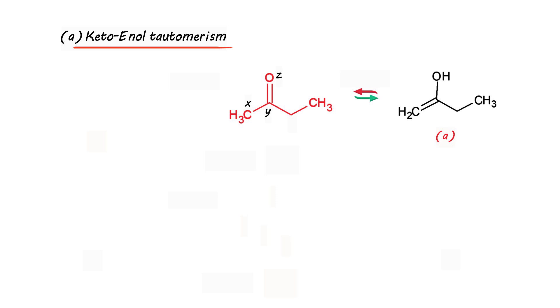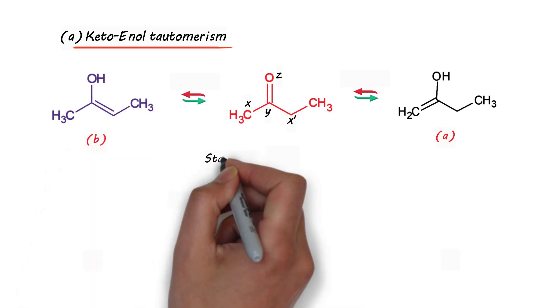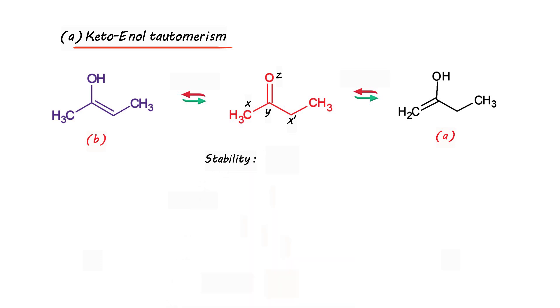But there's one more choice for making another tautomer if hydrogen migrates from X'. So you are getting a tautomer B. Now on comparing A and B, B is expected to be more stable compared to A. This is because the alkene is more substituted in B compared to that of A.